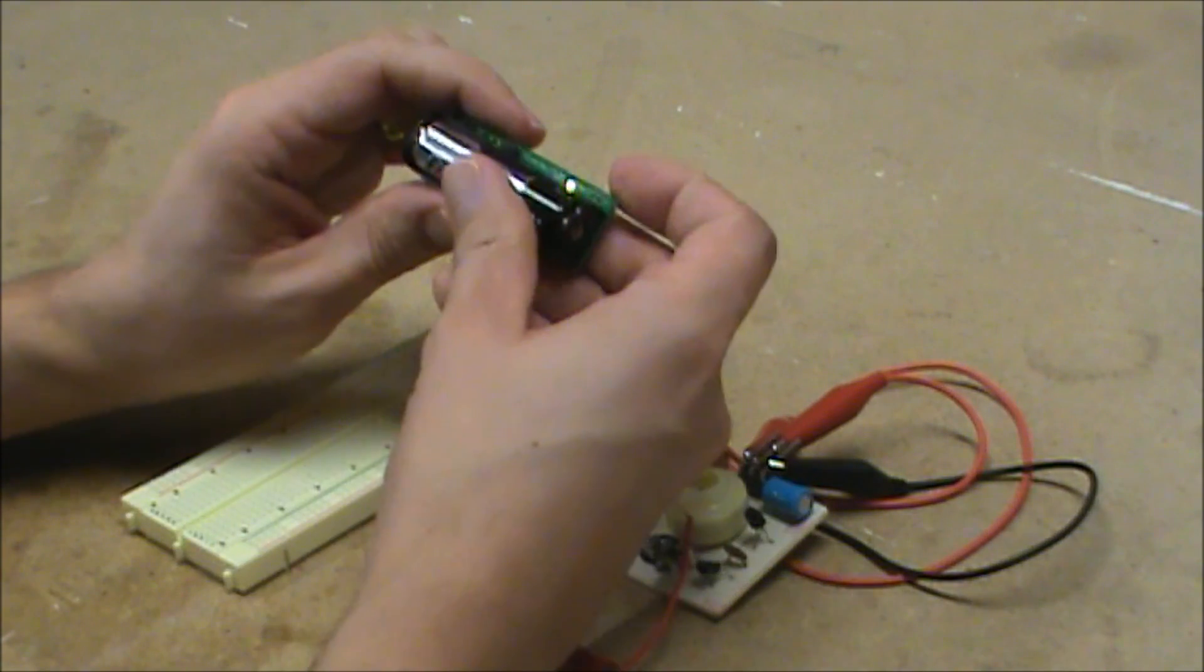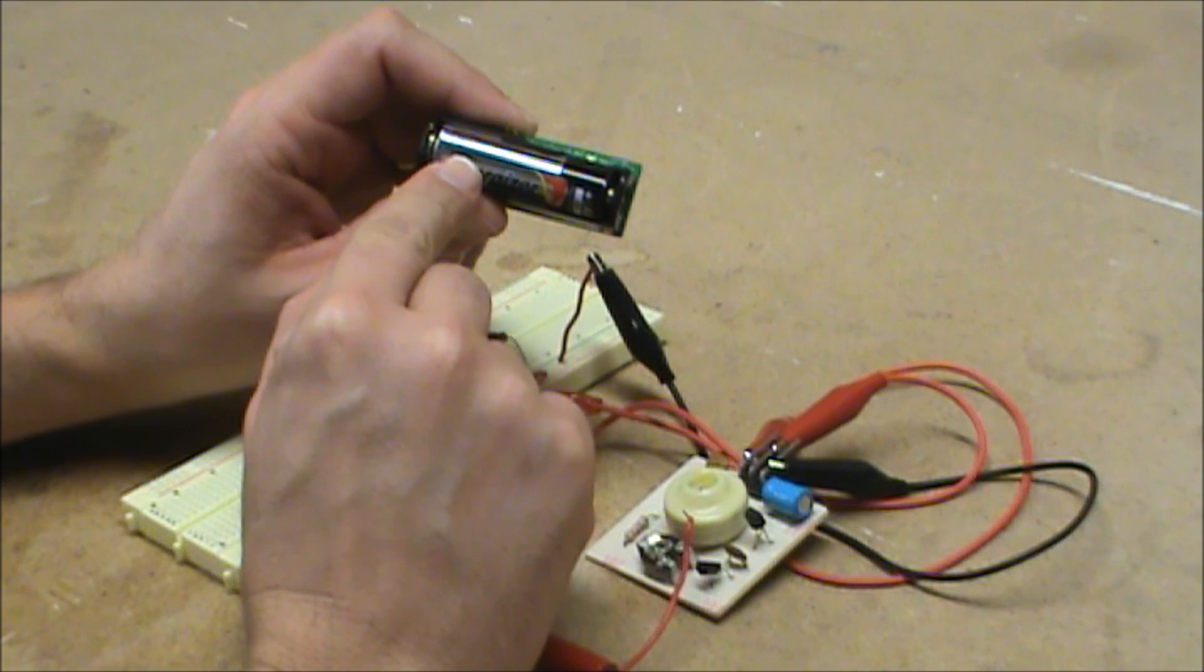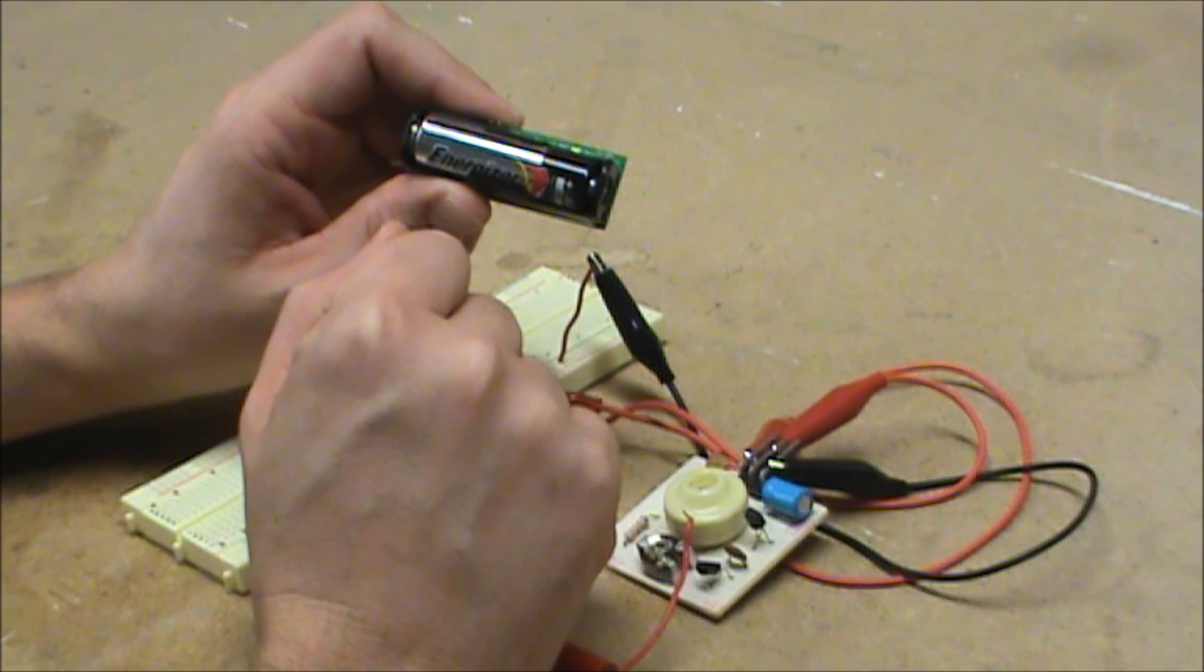So I decided to make what I call the Boostick. It takes a 1.5 volt AA and boosts that voltage up to 3.3 volts or 5 volts.